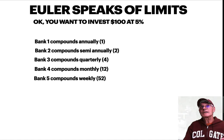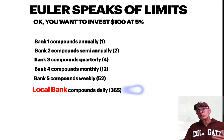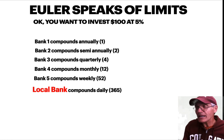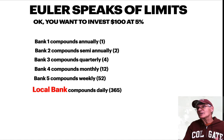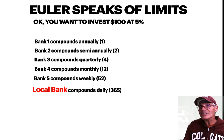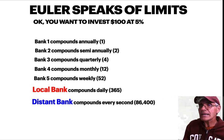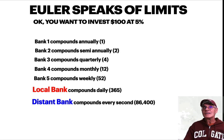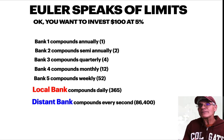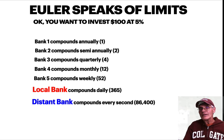Say you want to invest $100 at 5%. You look at local banks: one compounds annually, one semi-annually, one quarterly, one monthly, one weekly. Then you find the bank closest to you compounds daily — you're getting in your car right now. But then an ad comes on the radio: a distant bank 50 miles away compounds every second, 86,000 times a day. You change your GPS course and head for the distant bank.